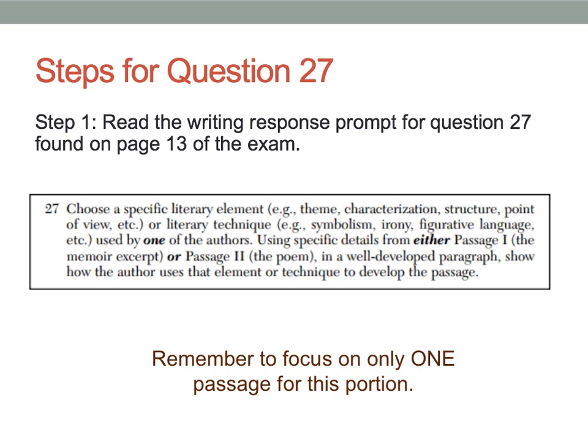So the first step for writing question number 27 is, of course, to read the writing prompt. This is found on page 13 of the exam. The prompt states: Choose a specific literary element — for example, theme, characterization, structure,